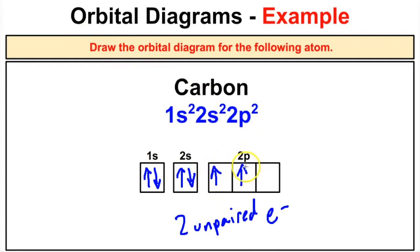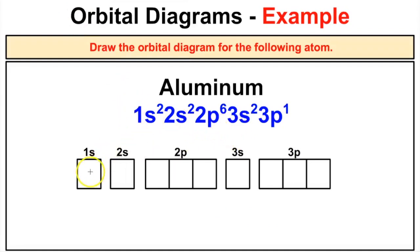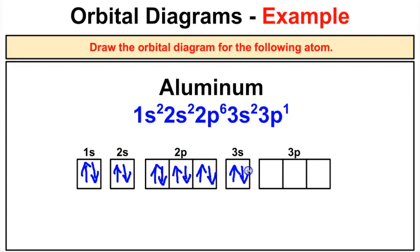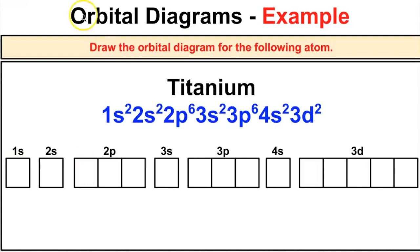Here is the electron configuration for aluminum. There are two electrons in the 1s orbital, two electrons in the 2s orbital, and six electrons in the 2p — so we first place one electron in each of the three 2p orbitals before going back to add a second. Then there are two electrons in the 3s orbital, and last, one electron in the 3p orbital, which can be drawn as either an up or down arrow.